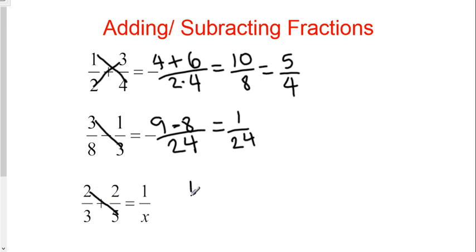2 times 5 is 10. And since it's plus, we're going to put a plus there. 3 times 2 is 6. Over 3 times 5 is 15. And we end up with 16/15, which would be our answer if we were just adding.